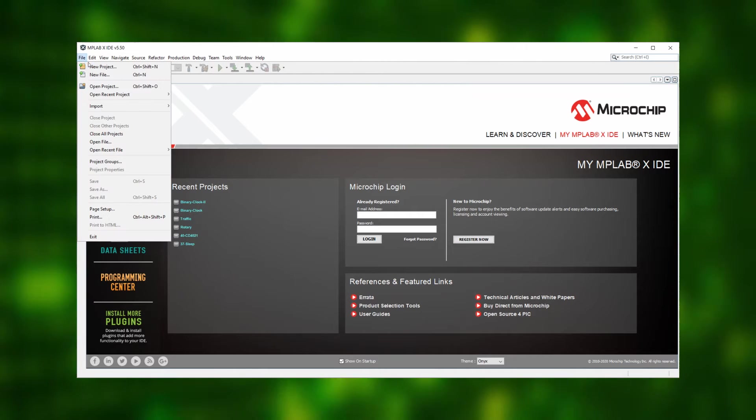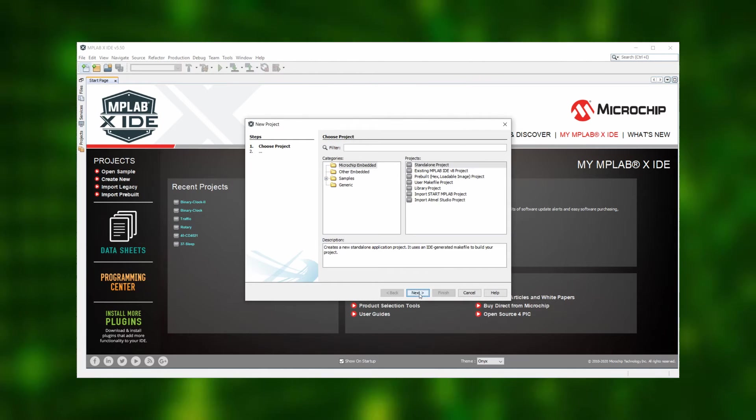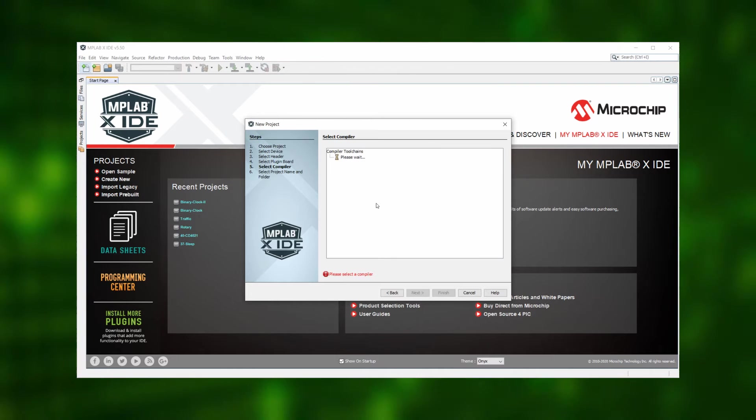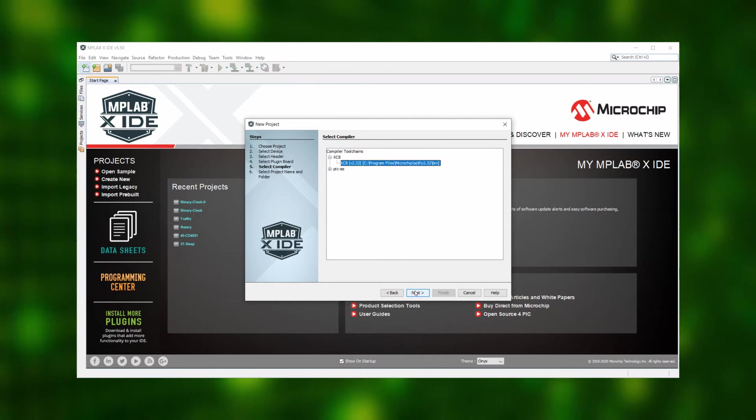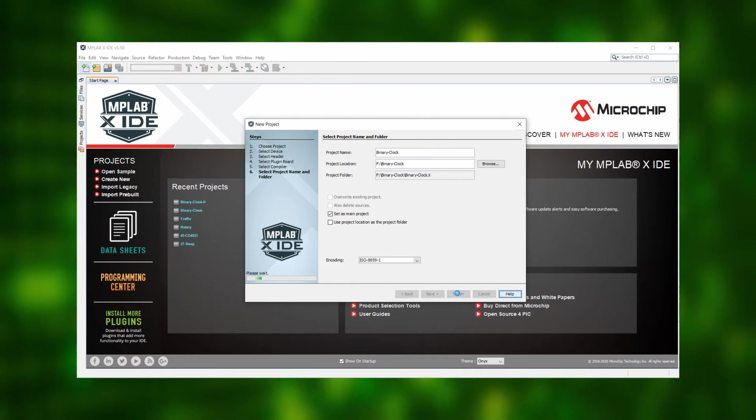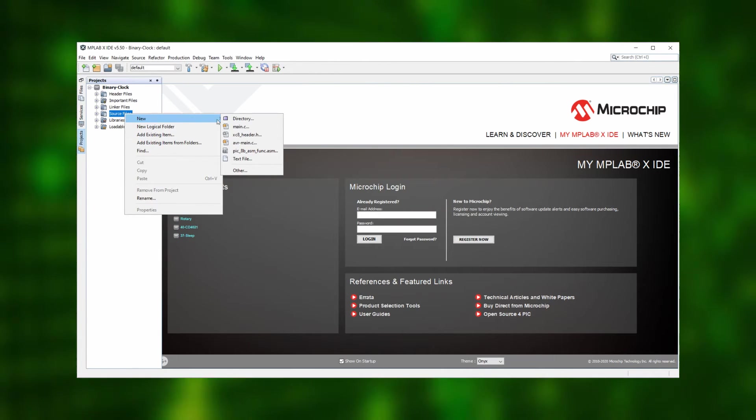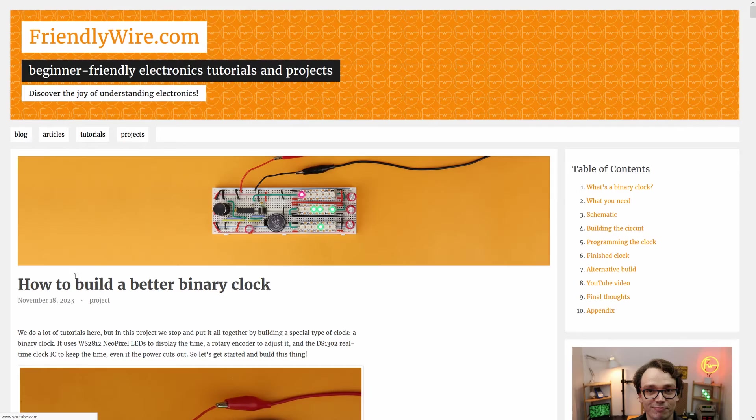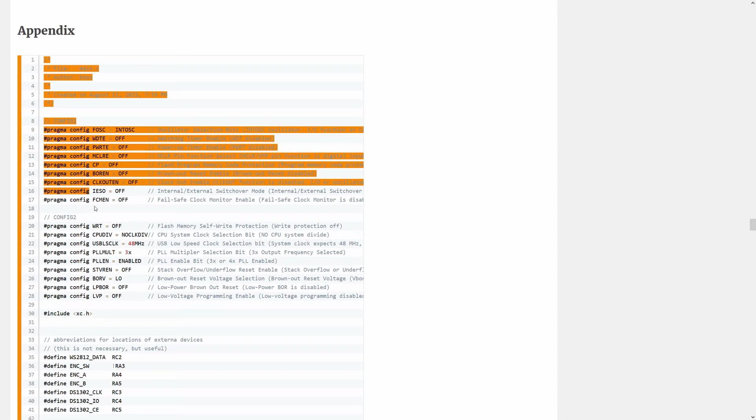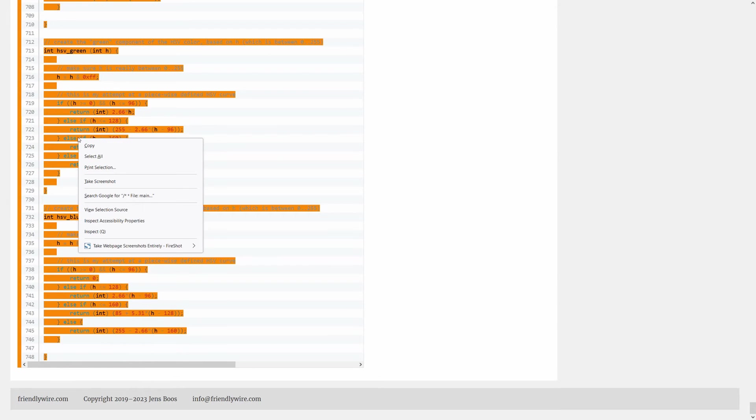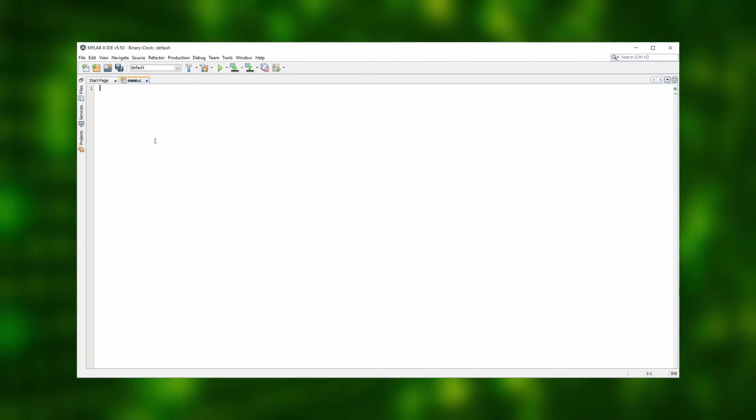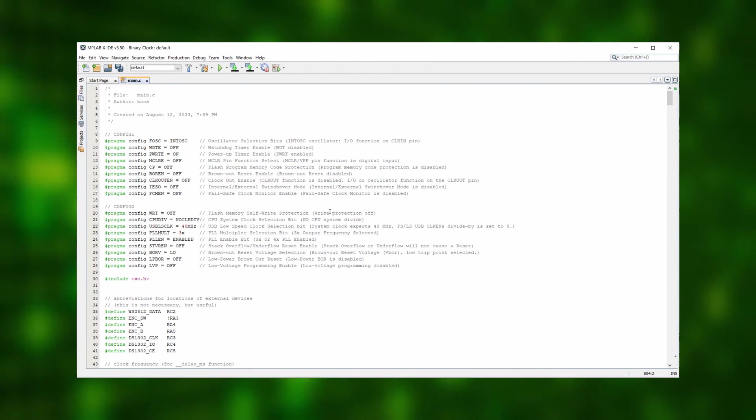First start the MPLAB IDE and create a new standalone project for the PIC16F1455 microcontroller. Select the XC8 compiler and after finishing up the setup let's add an empty main.c file to our project and that is where our program will go. Speaking of which go to the binary clock companion article on friendlywire.com and copy the source code at the bottom of the page.